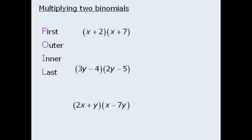Here's how the method works. When we are multiplying two binomials, our goal is to multiply each of the two terms in one binomial by each of the two terms in the other binomial. The FOIL method is a systematic way to perform these multiplications.